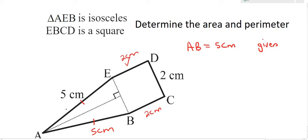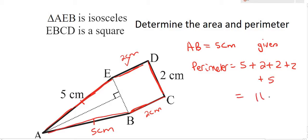And so to work out the perimeter you would just need the length on the outside and so that would be AE which is 5 plus ED which is 2, plus DC which is 2, plus CB which is 2, plus AB which is 5. And if we go work all of that out we should get 16 centimeters.